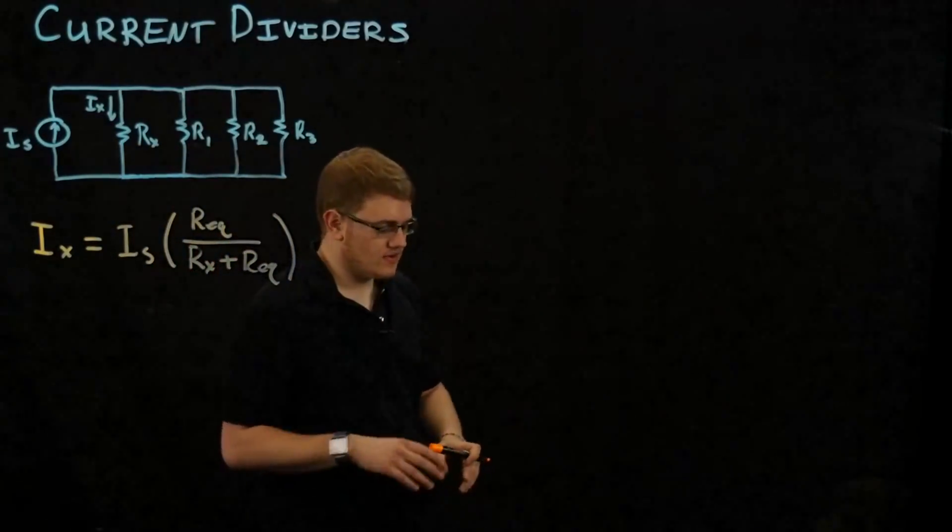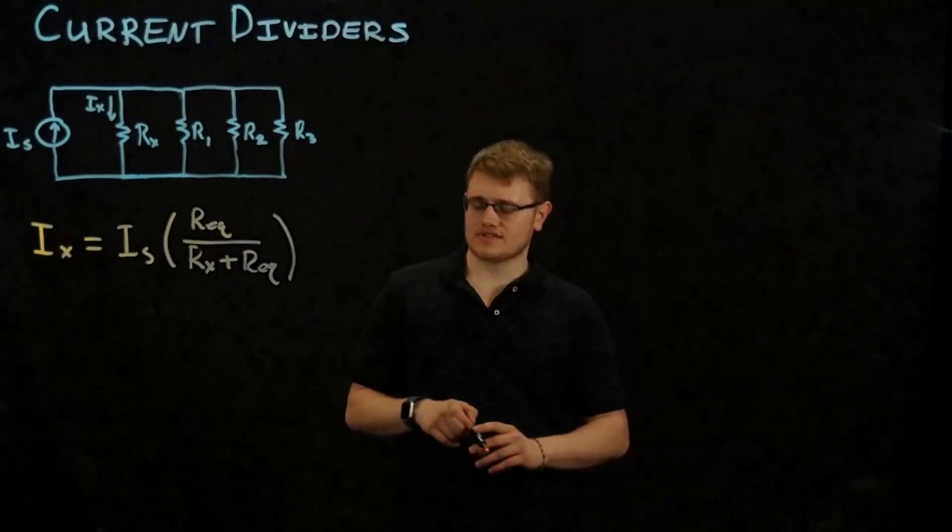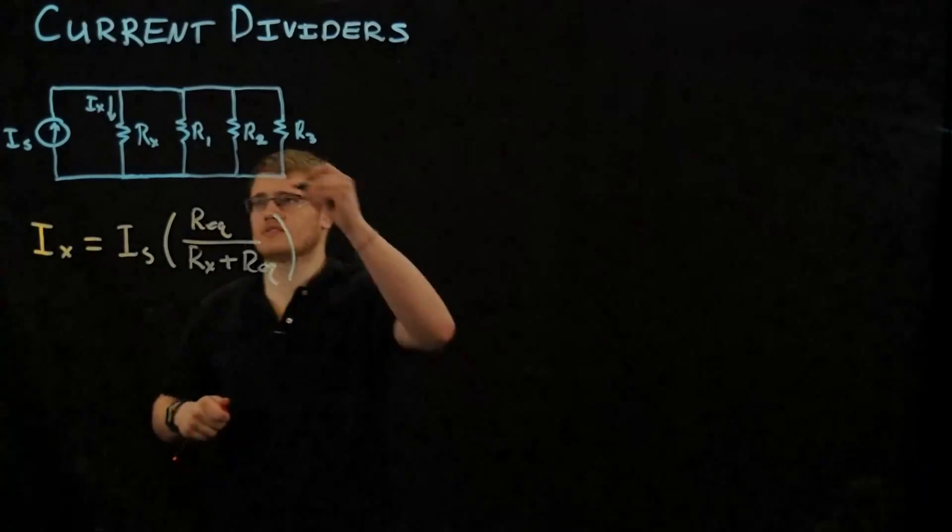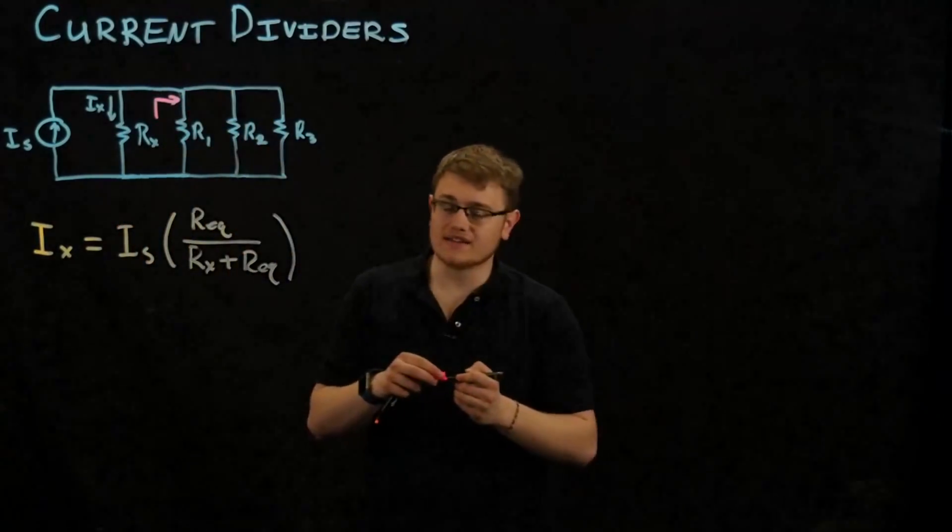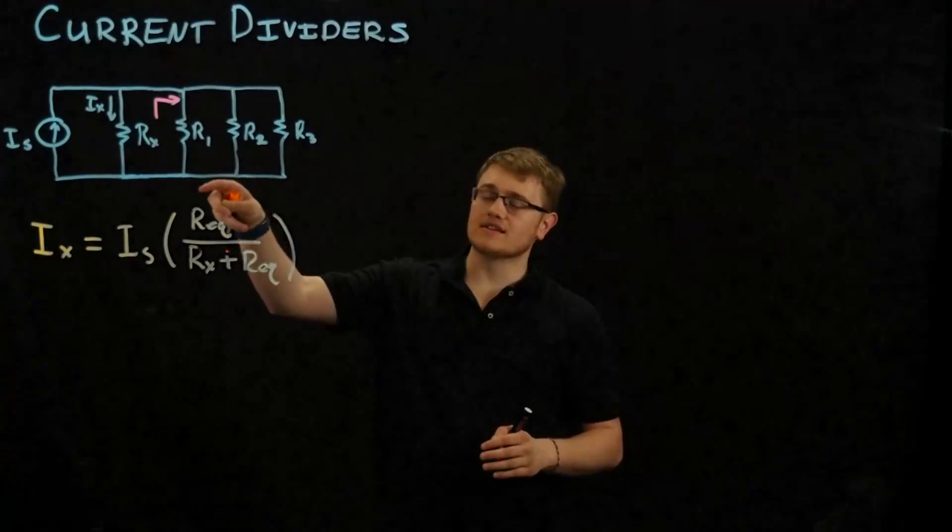But what is R equivalent? Well, that's these three resistors seen going in here, so combined into one resistor. Now, how can we do that? Well, as we can see, they're in parallel.